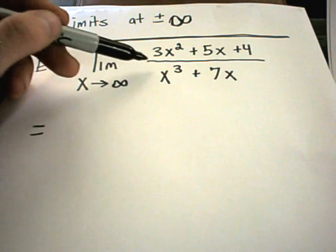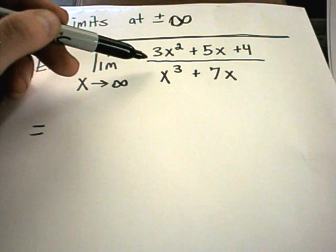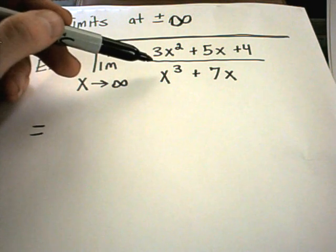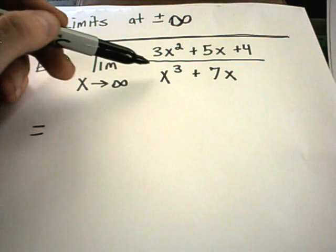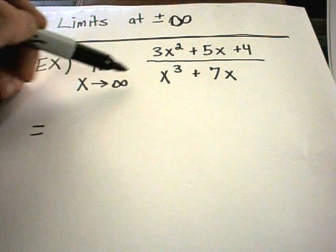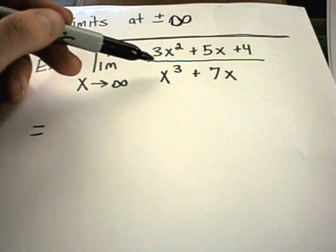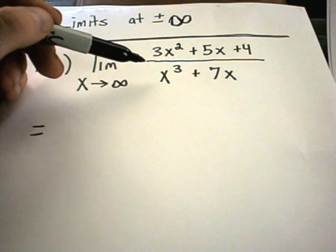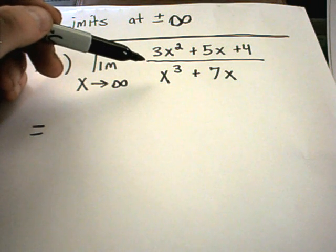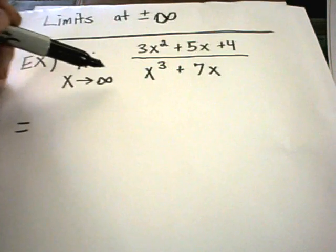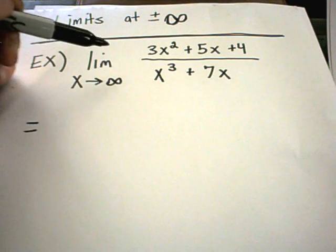So maybe I'll put 100 into this formula, get a number out. I'll put 1,000 into this formula, get a number out. I'll put a million into the formula, get a number out, a billion, a trillion, a gajillion, and you just keep going and going. The idea is, if the numbers you're getting out are getting closer and closer to something, that's what we say the limit is.